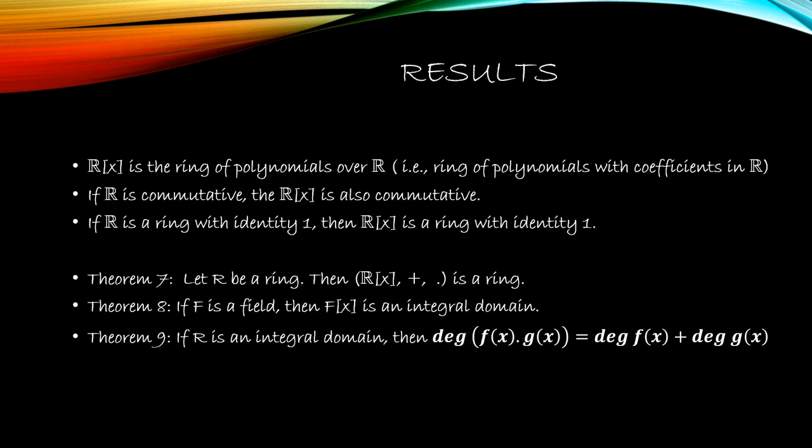R[X] is a ring of polynomials over R — a ring of polynomials with coefficients in R. So if R is a ring, then R[X] is a ring of polynomials where the coefficients are in R. If R is commutative, then R[X] is also commutative. If R is a ring with identity 1, then R[X] also has identity 1. Theorem: Let R be a ring. Then R[X] with plus and dot is a ring. If F is a field, F[X] is an integral domain. If R is an integral domain, then the degree of f(X)·g(X) equals the degree of f(X) plus the degree of g(X).